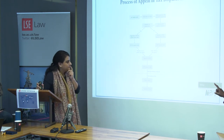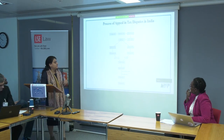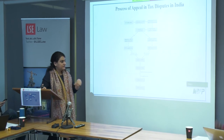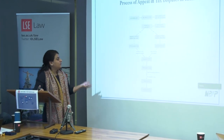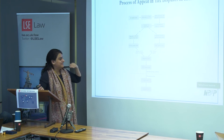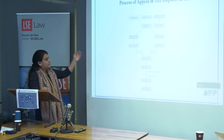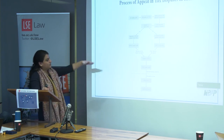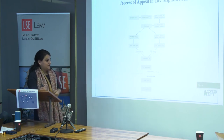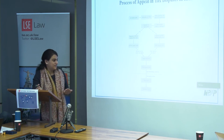Q: What's the difference between cases that go to the CITA versus the DRP? If the order is at the draft stage, it goes to the DRP, which consists of three commissioners of income tax who help finalise the order. After that, the assessee can contest again. But if the order is already finalised, it goes to the Commissioner of Income Tax Appeals and then to the Tribunal if disputed. The DRP must complete proceedings within nine months; the CITA ideally within two years but it's at their discretion.